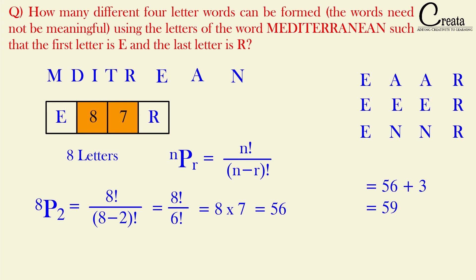No complex formula was needed — only the simple nPr formula or the fundamental principle of counting. The key is the logic behind handling the repeated letters E, A, and N. Understanding why the repeated letters must be collapsed into single instances is what governs the correct path to the answer.